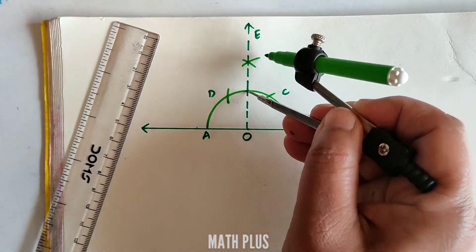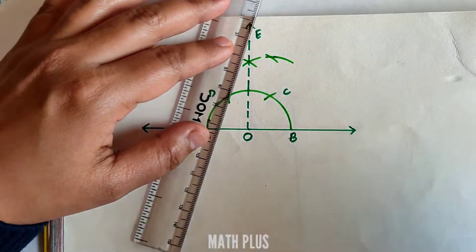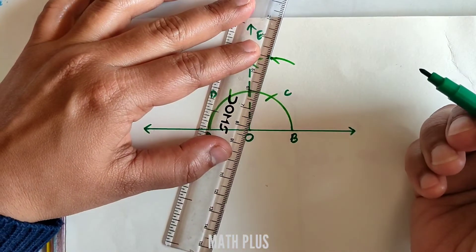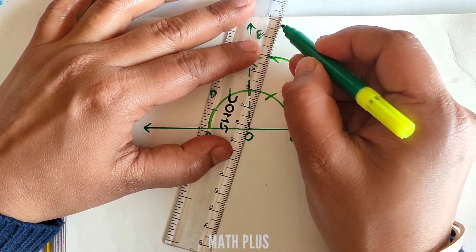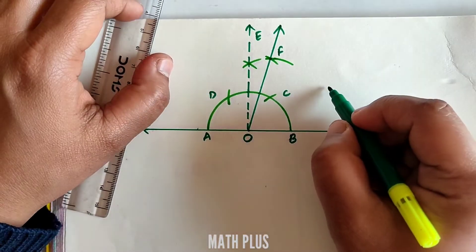Over here we get 75 degrees. So connect this intersection point with O and name it as F. So angle FOB is 75 degrees.